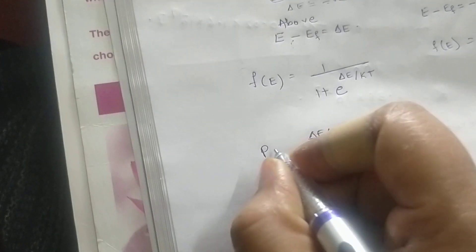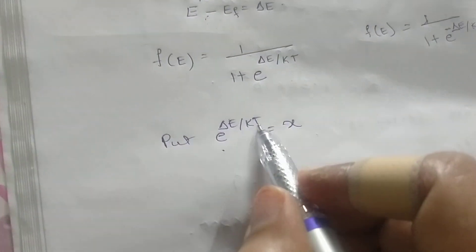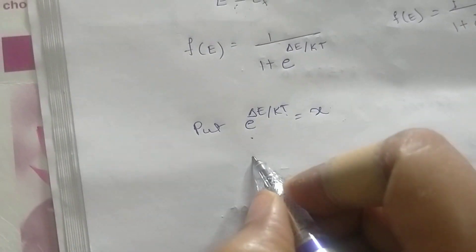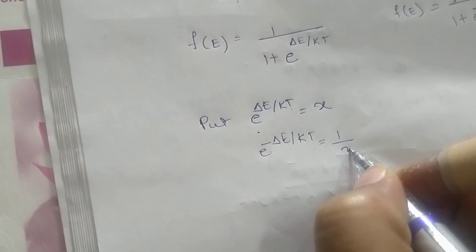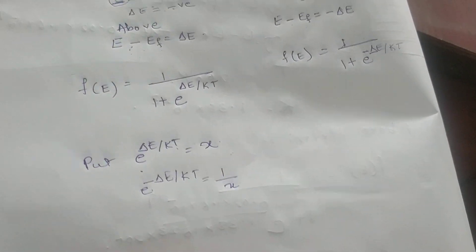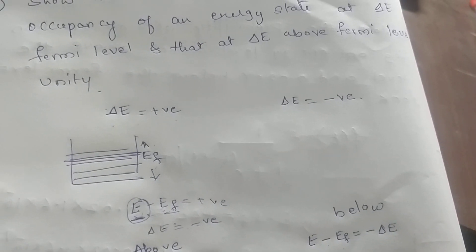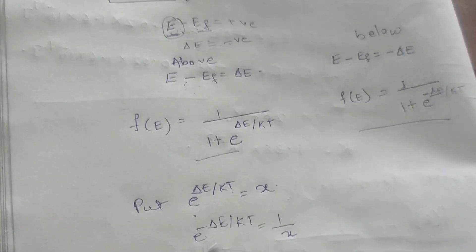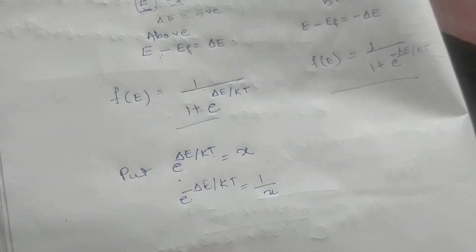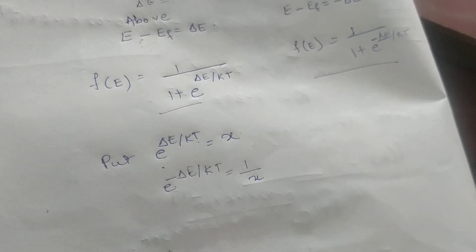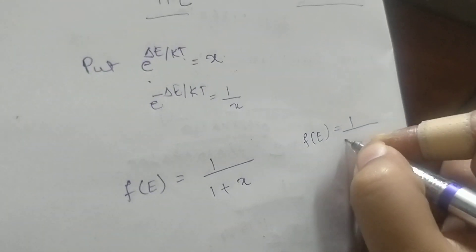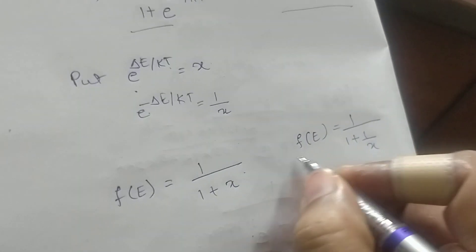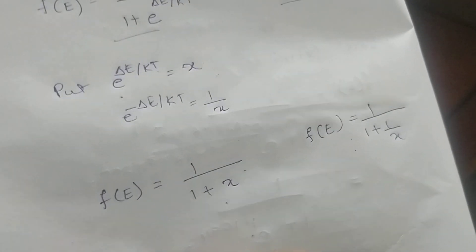Let us put e to the power delta E by kT equal to x. Then e to the power minus delta E by kT equals 1 over x. According to the statement, when you add the two f(E) values, the result should be 1. So for above the Fermi level, f(E) = 1 over (1 plus x), and for below the Fermi level, f(E) = 1 divided by (1 plus 1 over x).